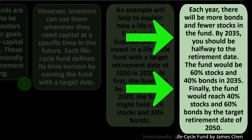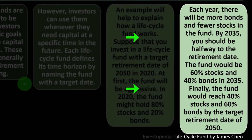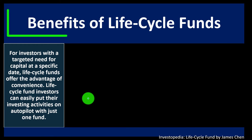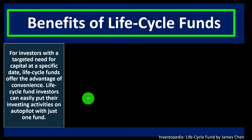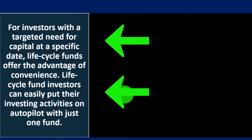Each year there will be more bonds and fewer stocks, because bonds are more secure, fixed-income investments that lower volatility and lower risk. By 2035 — halfway to the retirement date — the fund would be 60% stocks and 40% bonds. Finally, the fund would reach 40% stocks and 60% bonds by the target retirement date of 2050.